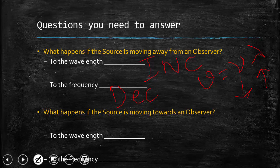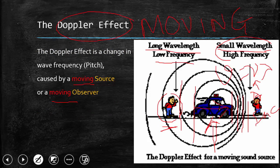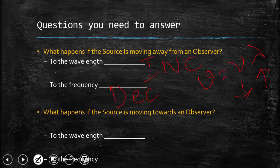What happens if the source is moving towards an observer? You see that the wavelengths — the circles — are getting closer to each other. And if you remember that the distance between these circles is the wavelength, what is happening to the wavelength? In this case, wavelength decreases. And what happens to the frequency? Frequency increases.